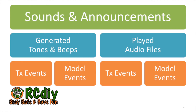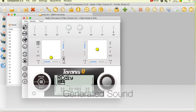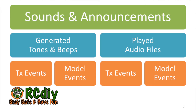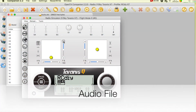OpenTX has two forms of audio. The first is by generating tones and beeps of different frequencies and durations, such as when the trim is changed. The second is by playing audio files from a micro SD card, such as the trim center announcement. [Audio example: "Trim center."]